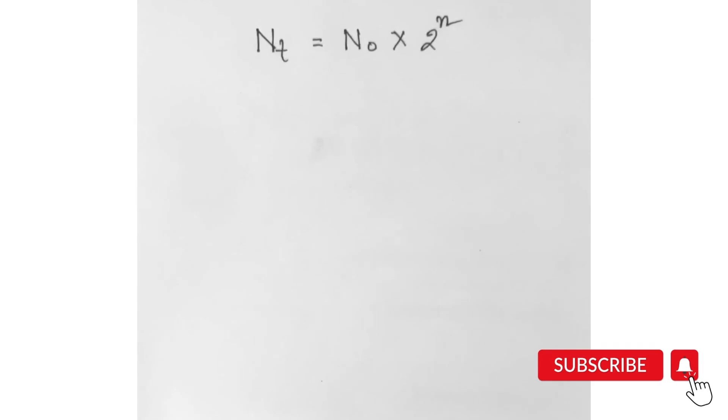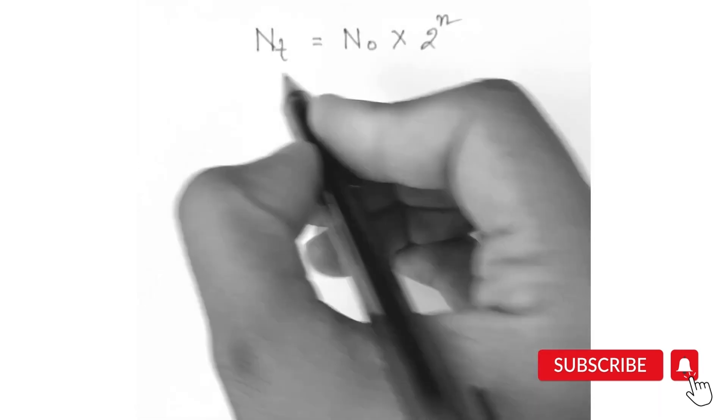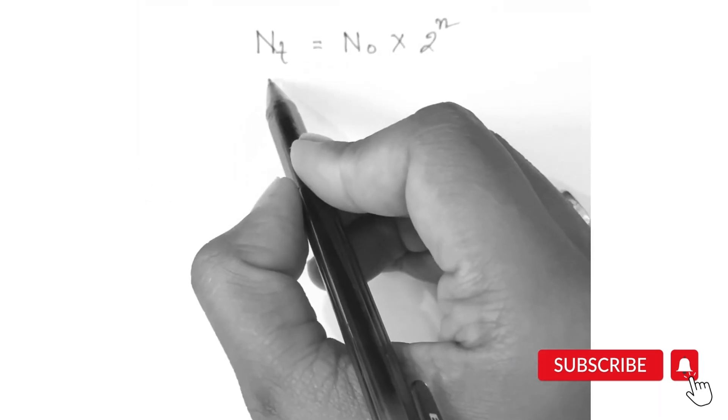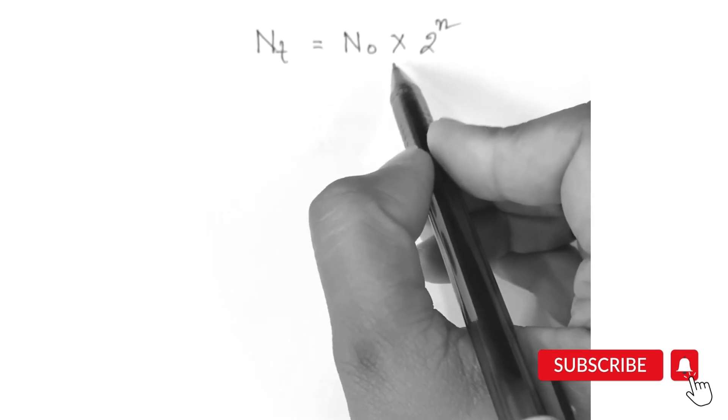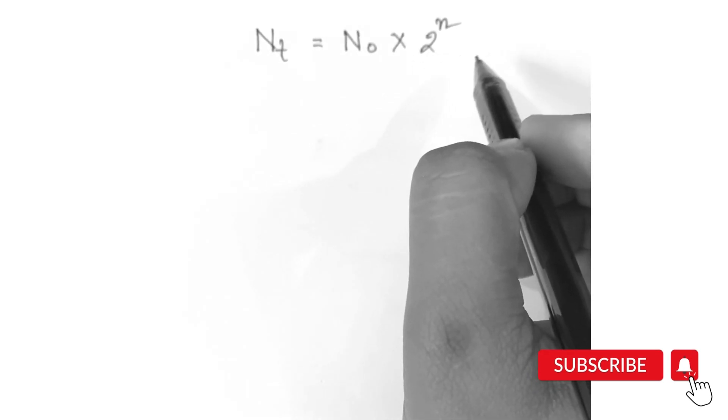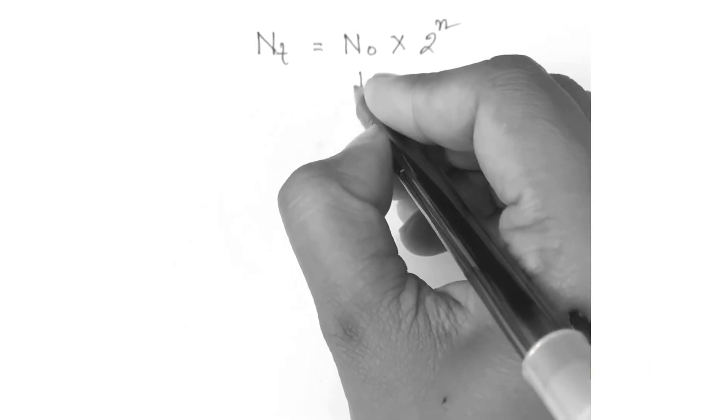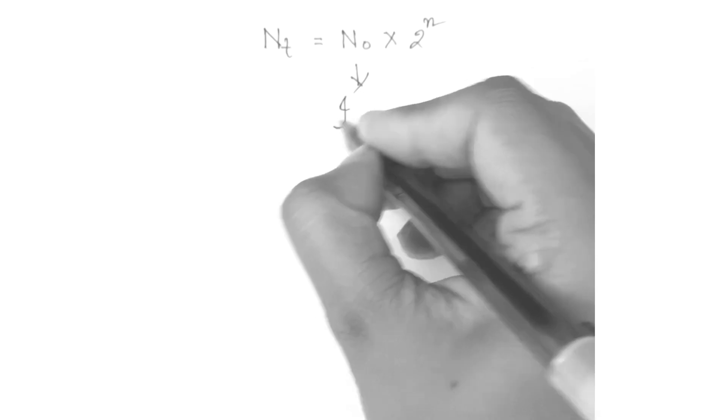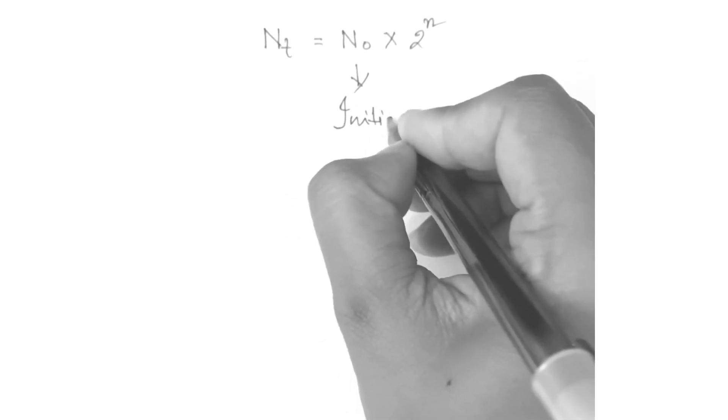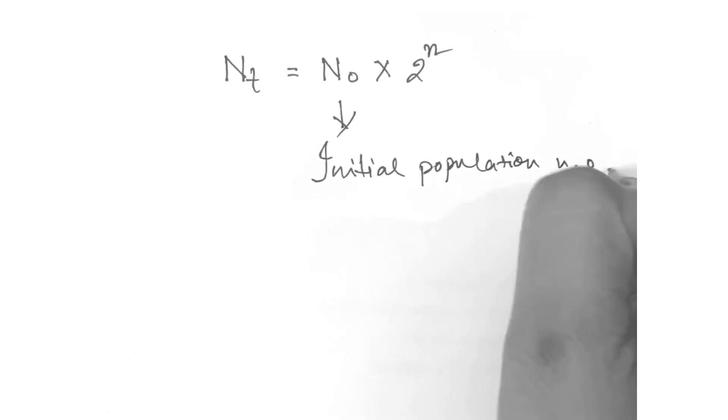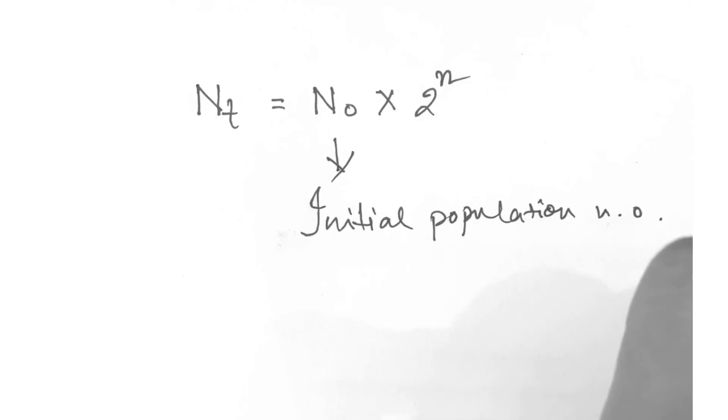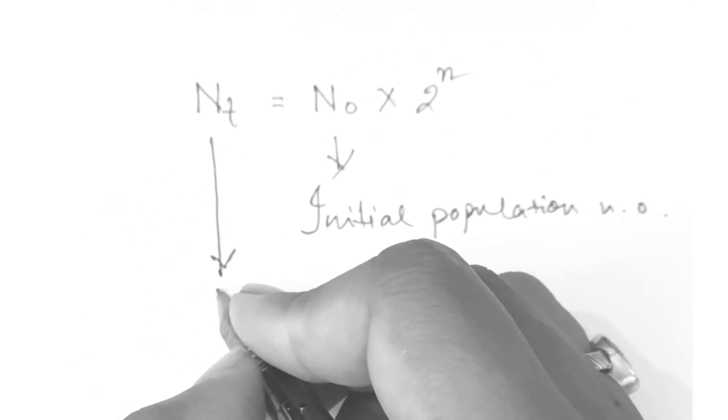The observations can be expressed as an equation given here: Nt equals N0 multiplied by 2 to the power n. Now let's see what these values signify. N0 signifies the initial population number, while Nt signifies the population at time t.